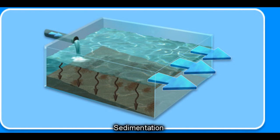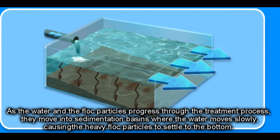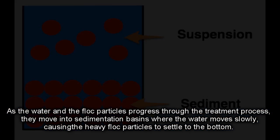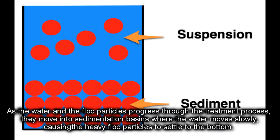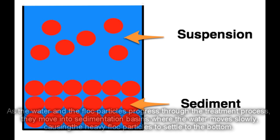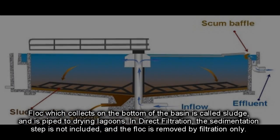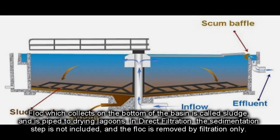Sedimentation: As the water and the flocked particles progress through the treatment process, they move into sedimentation basins where the water moves slowly, causing the heavy floc particles to settle to the bottom. Floc which collects on the bottom of the basin is called sludge, and is piped to dry on lagoons.